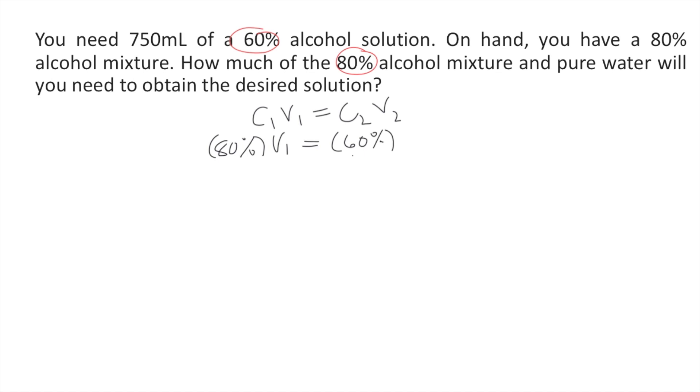V2 is the final volume. It's the volume that you need to prepare. So in this problem, it says here, you need to prepare 750 ml. So that is our V2, 750 ml.